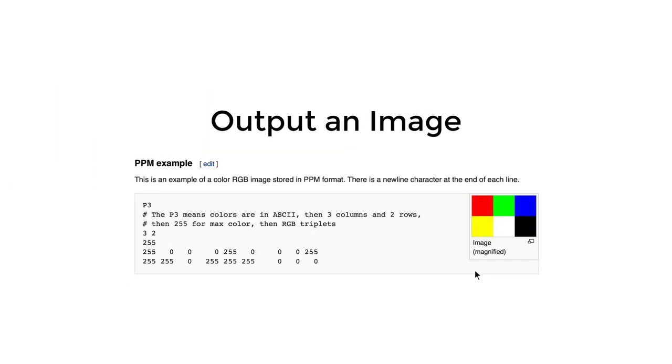Let's talk about how to output an image. We will use the PPM format, because it is a simple ASCII text format that's really easy to generate by hand. We first have some meta information, like the width and height of the image. Then it is the max color value, which in this case is 255.